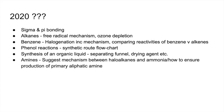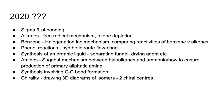A question on amines — possibly the suggested mechanism between haloalkanes and ammonia. Last year there was some stuff on unfamiliar mechanisms, so I'm thinking they could be going along those lines again: suggest the mechanism between haloalkanes and ammonia, and how do you ensure the production of a primary aliphatic amine? Some synthesis involving carbon-carbon bond formation. Chirality — that was on last year a little bit — but maybe drawing more 3D diagrams of isomers, maybe throwing in two chiral centre molecules to spice it up a little bit.